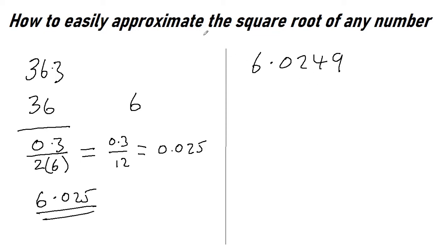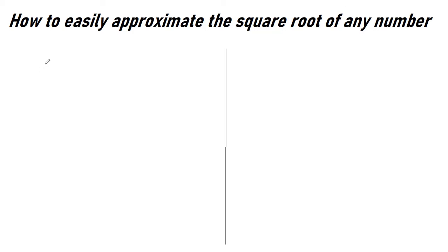Let's try another one. Let's do the square root of 65. We know that the square root of 64 is 8. The difference here is 1 and we just divide that by twice this number. So that's one over sixteen, which equals 0.0625.